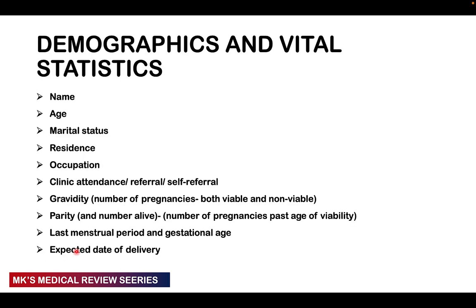Beginning with demographics and vital statistics — these are important first to identify the patient, so get their name. Age is important because in obstetrics, increasing maternal age predisposes the mother to many different things. Ask about marital status, residence, and occupation. Also note that there is an age of consent for C-sections — around age 22 — so if someone is below this age they'll need their legal guardian to sign consent.